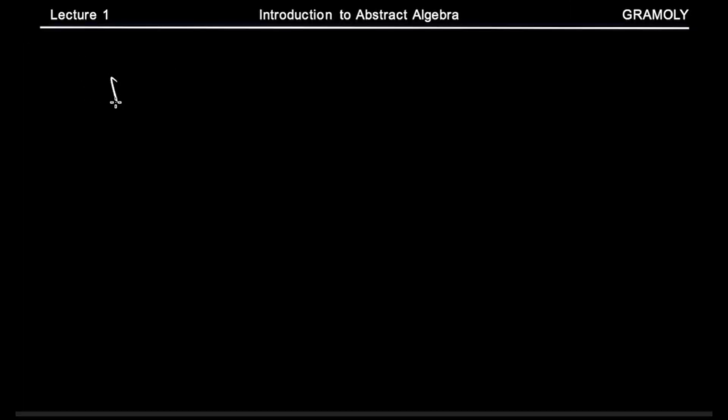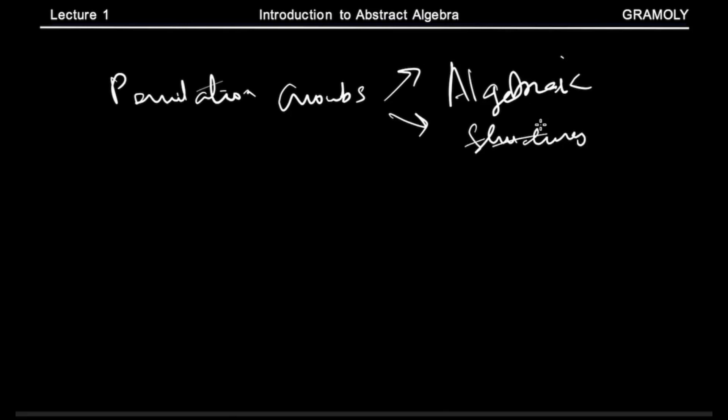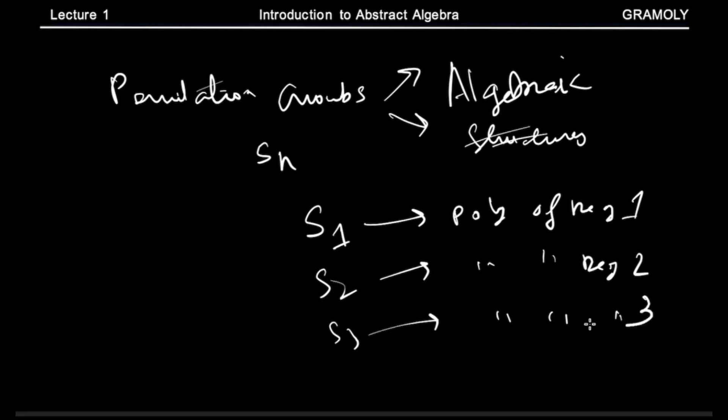There is something called permutation groups. Permutation groups is an algebraic structure and it is known to directly link with polynomials. I won't talk about how it exactly links because it does involve some technical terms but it links, there is some relation. Also permutation group is denoted by SN which is permutation group of size n. So permutation group of size 1 links with polynomial of degree 1, s2 links with poly of degree 2, s3 with poly of degree 3, and so on and so forth.